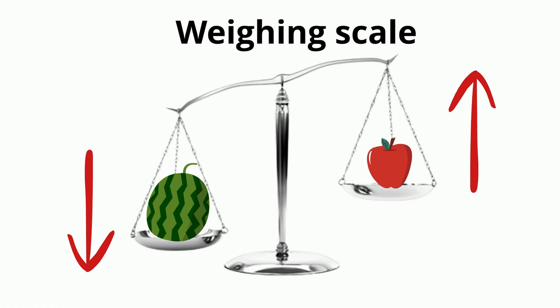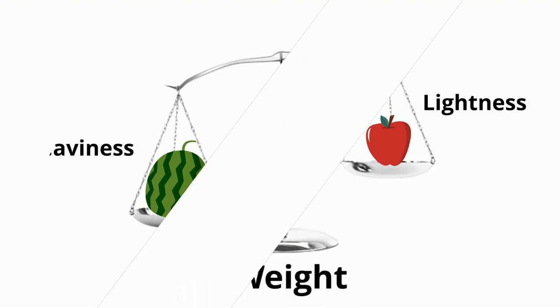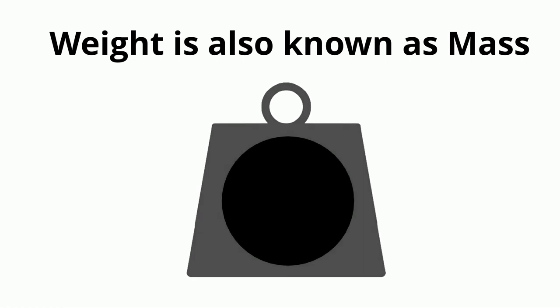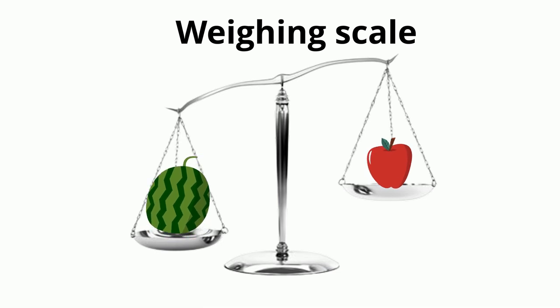That is so because apple is light and watermelon is heavy. The heaviness or lightness of an object is called its weight. Weight is also known as mass. So by putting an apple and a watermelon on a weighing scale, we found that watermelon has more weight than apple because it is heavier than apple. This weighing scale is used to compare the weight of two objects.